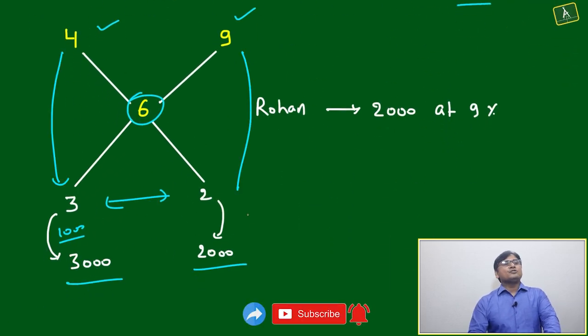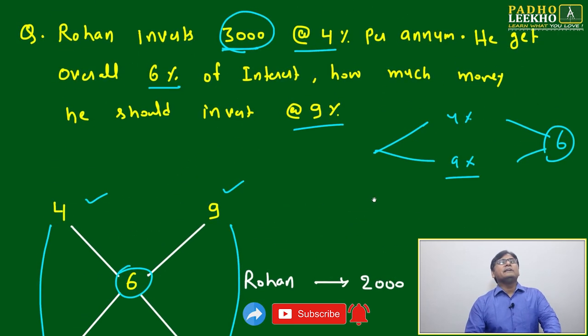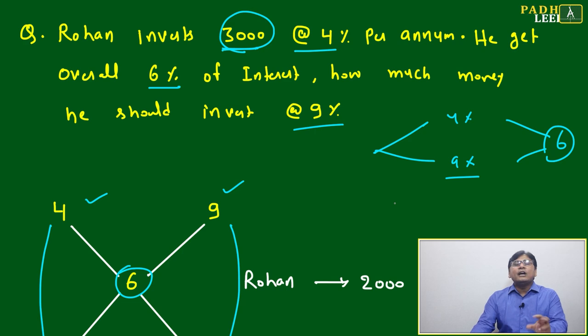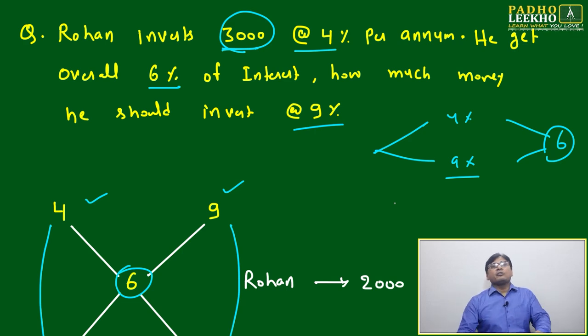Rohan invests rupees three thousand at the rate of four percent. Then nine percent he has to invest two thousand rupees. Means total five thousand rupees he will invest - three thousand at the rate of four percent, two thousand at the rate of nine percent. Overall he will get six percent.